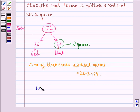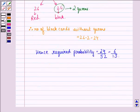Hence, required probability is equal to 24 divided by 52, that is equal to 6 divided by 13. So our answer to this question is 6 divided by 13.